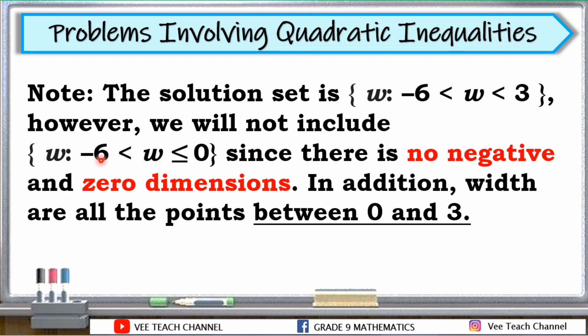This is an important note. The solution set is, yun na nga yung W is greater than negative 6 but less than 3. However, we will not include yung solution set natin from negative 6 hanggang 0. Kasi nga, there is no negative and 0 dimensions. In addition, width are all the points between 0 and 3. Ang hinahanap kasi natin ay yung sukat ng dimensions ng garden plot natin. Sa mga measurement na katulad nun, hindi gagamit or hindi tayo gumagamit ng negative. Kaya, hindi natin pwedeng gamitin yung negative numbers as our measurement. Kaya, ang magiging answer natin dyan is yung mga numbers sa pagitan lang ng 0 and 3. Ibig sabihin, 1 and 2. Yan, yan lang yung pupwede natin gamitin as our solution or dimension ng ating width.